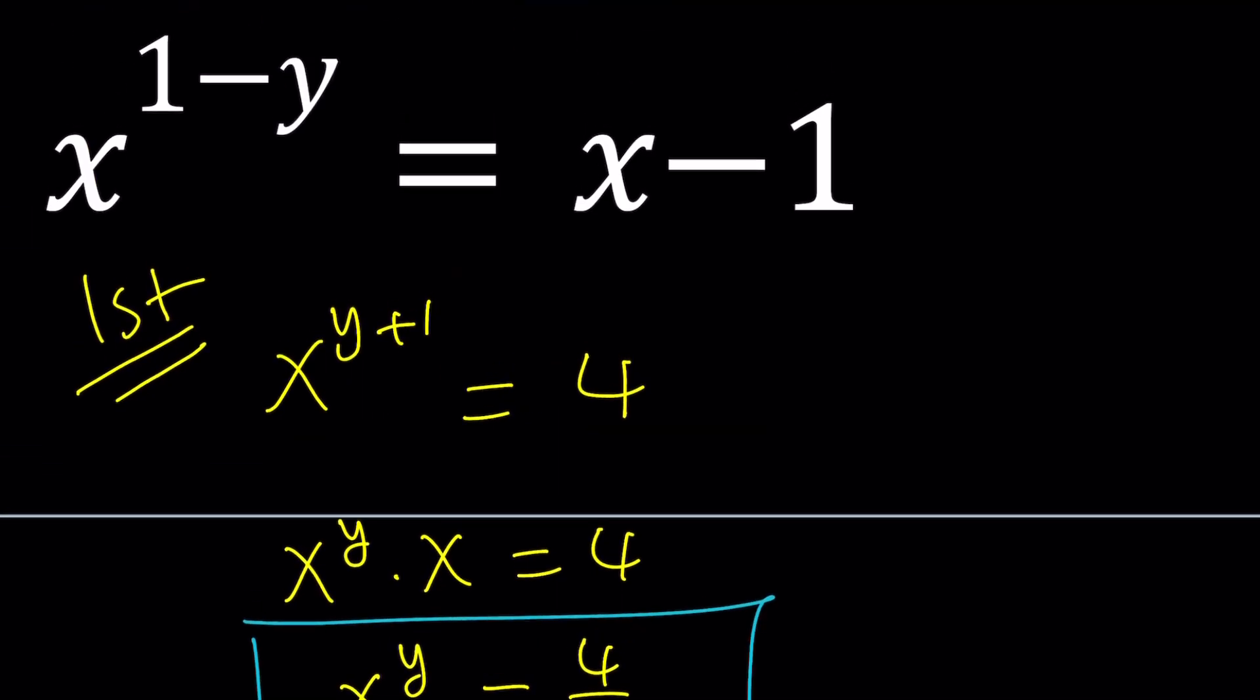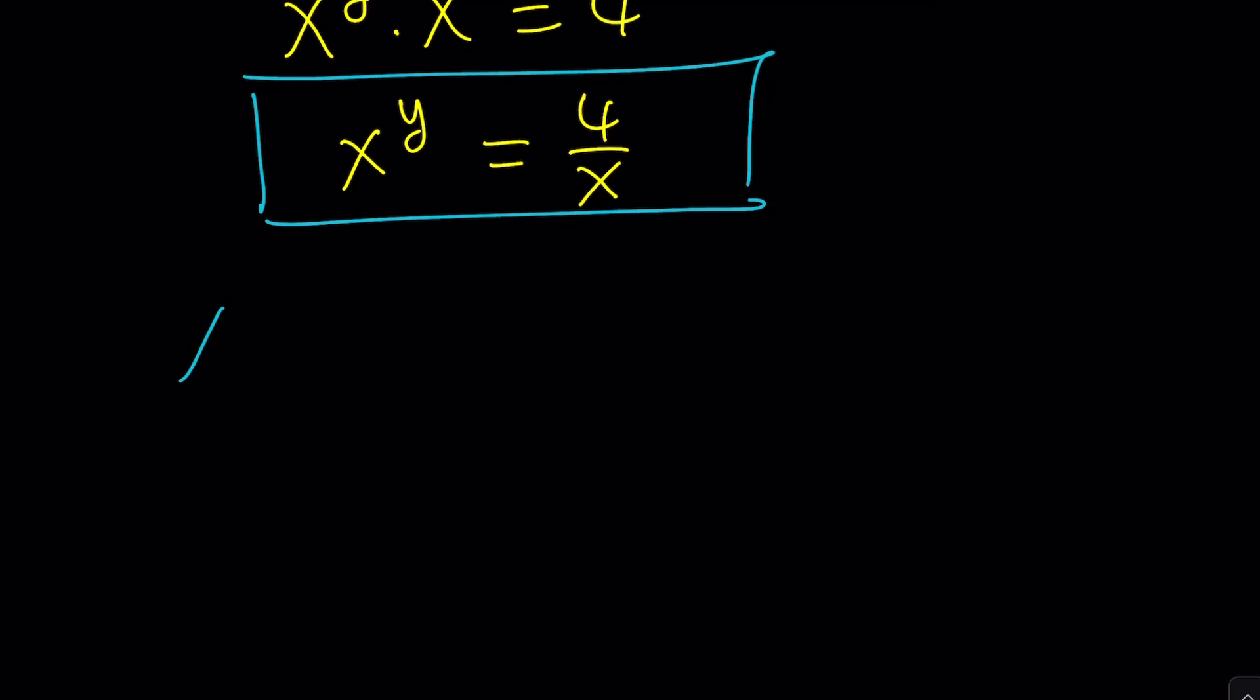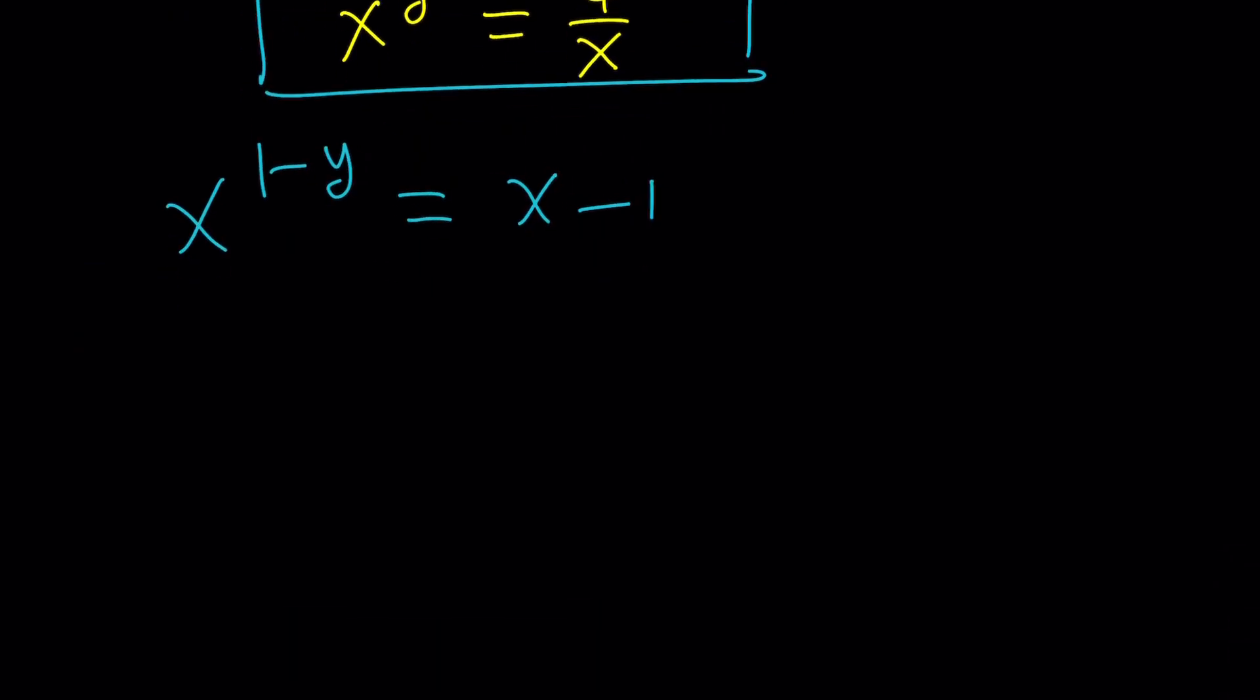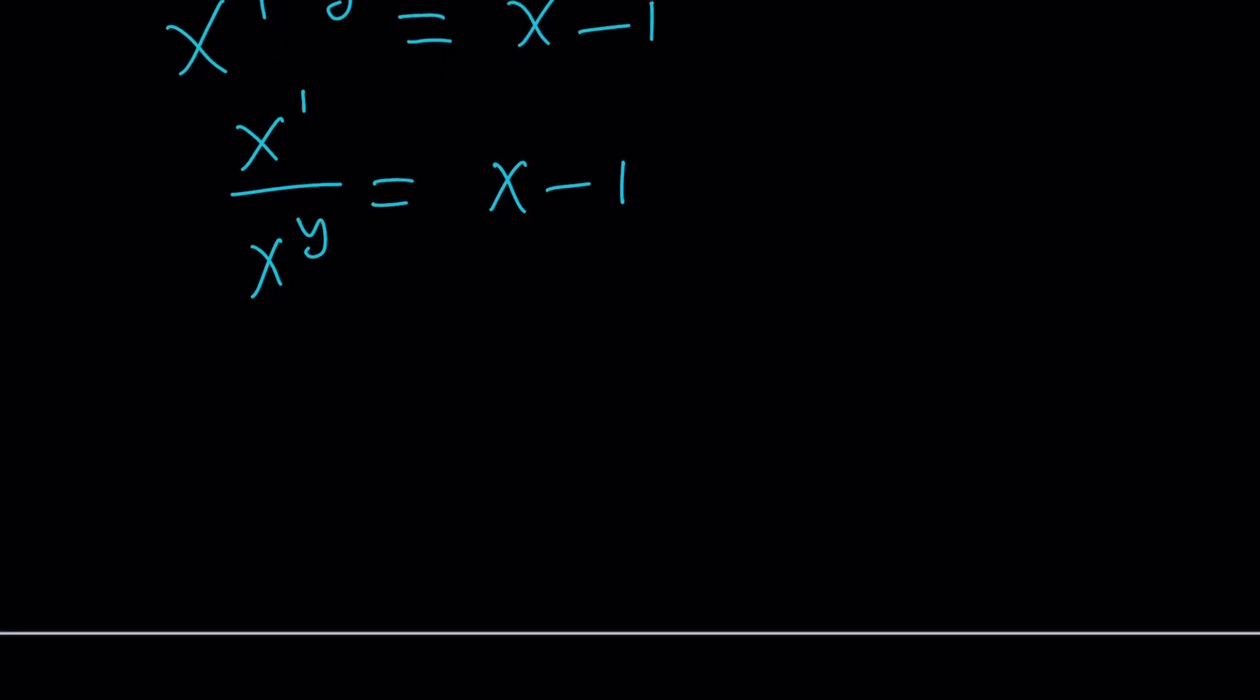I can do the same thing with the second equation. Let's isolate it: x to the power 1 minus y equals x minus 1. Because the exponents were subtracted using the laws of exponents, we can write this as a quotient. x to the first power divided by x to the y equals x minus 1. We can isolate and write x to the y as x over x minus 1.